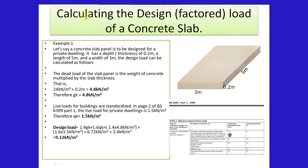Now we go on to an example — calculating the design load of a concrete slab. Example 1. Let's say we have a slab panel and it is to be designed for a private dwelling. It has a depth or thickness of 0.2 meters, a length of 5 meters, and a width of 3 meters. The design load can be calculated as follows.